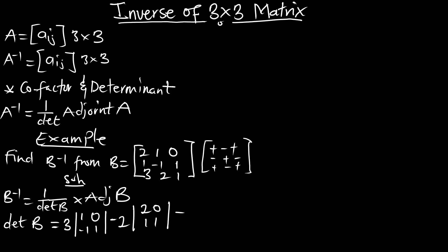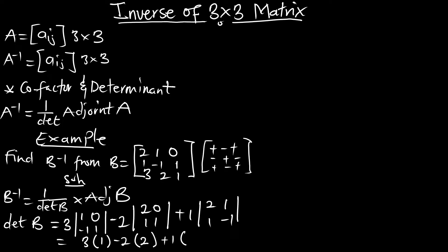Then plus 1, the 2x2 matrix, which is 2, 1, 1, -1. This is going to be 3 here, multiplying. The determinant of this is going to be 1, minus 2, multiplying the determinant here — that would be 2 — then plus 1, multiplying the determinant here, that is -3.